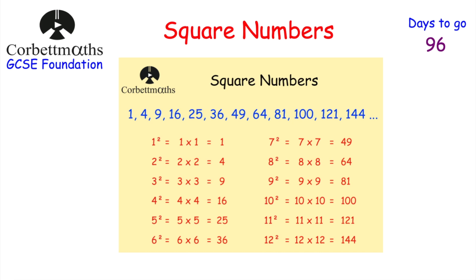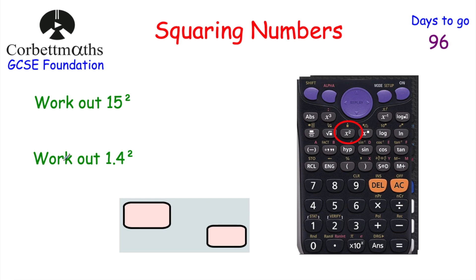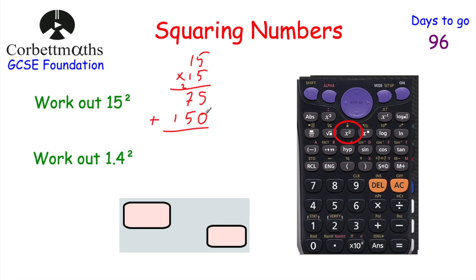It's also important to be able to square numbers. If we're asked to work out 15 squared without a calculator, the squared symbol means multiply by itself, so we do 15 multiplied by 15 using column multiplication. 5 times 5 is 25 — put the 5 down, carry 2. 5 times 1 is 5, plus 2 is 7, so 15 times 5 is 75. Multiplying by 10: put a 0 down, 1 times 5 is 5, 1 times 1 is 1. Adding: 5, then 7 plus 5 is 12 — put 2 down carry 1, and 1 plus 1 is 2. So 15 squared equals 225.